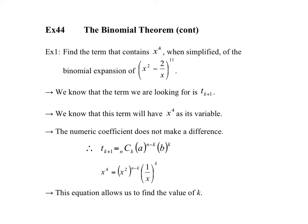So if we were to expand that completely, there is a term that would contain only x to the power 4, and we have to investigate and find out which one that is. We know that the term we're looking for is term k plus 1. We don't know the value of k. So if it's the fourth term, k would be 3. If it was the sixth term, k would be 5.